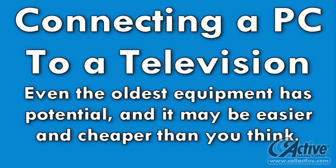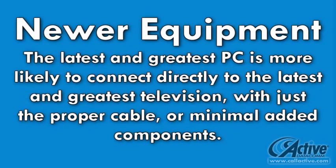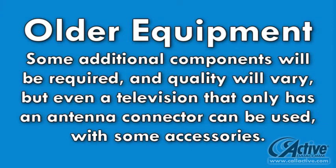Even the very oldest computers and televisions can usually be adapted to work together. Newer computers and televisions may have connectors that are directly compatible with one another, but users with older hardware can still display computer content on televisions. Quality will vary widely depending on the configuration, and some content may require specialized hardware to satisfy digital rights management requirements.